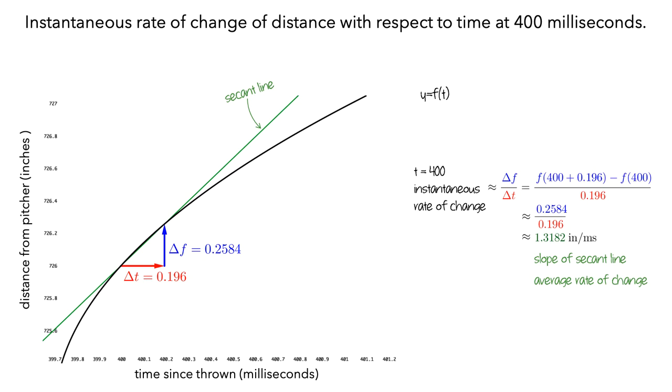Also, the slope of the secant line has become even steeper, indicating that the average rate of change over this interval from 400 milliseconds to just before 400.2 milliseconds is even larger. Now, it looks like the secant line almost matches the function over the interval.